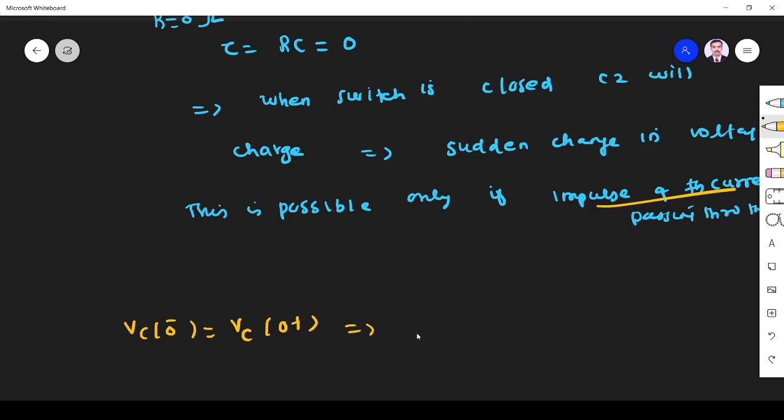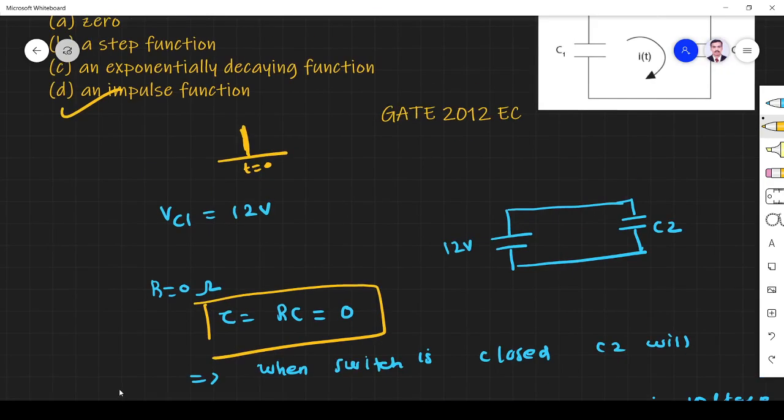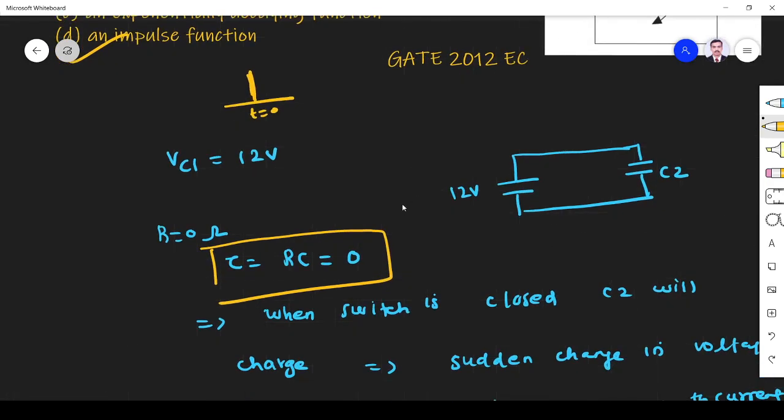This indicates the capacitor cannot change voltage instantaneously. It will take some time. Here, since time constant tau equals 0, it will change the voltage, charge instantaneously and reach 12 volt immediately provided the current flowing through this circuit is delta(t). That is unit impulse function. Thank you.